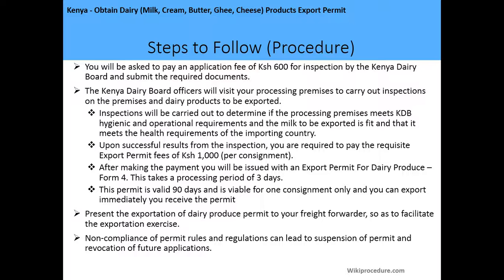Upon successful results from the inspection, you will be required to pay the export permit fee of 1,000 shillings per consignment. After making the payment, you will be issued with an export permit for dairy produce, which is Form Number 4. The process takes three days, the permit is valid for 90 days, and is viable for one consignment only.